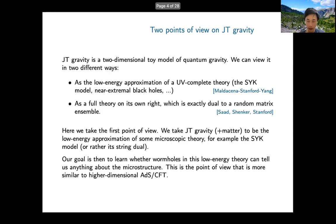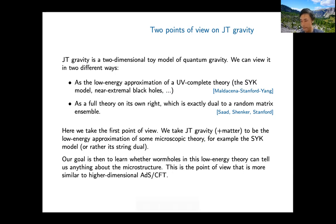The question I will ask is whether wormholes in JT gravity plus matter can tell us anything about the microstructure—the statistics of microstates of the SYK model. In higher dimensions, the analogue would be Einstein gravity with matter, and we want to understand whether wormholes can tell us something about the UV-complete theory like string theory, which is difficult to study directly. Are there any questions at this stage?